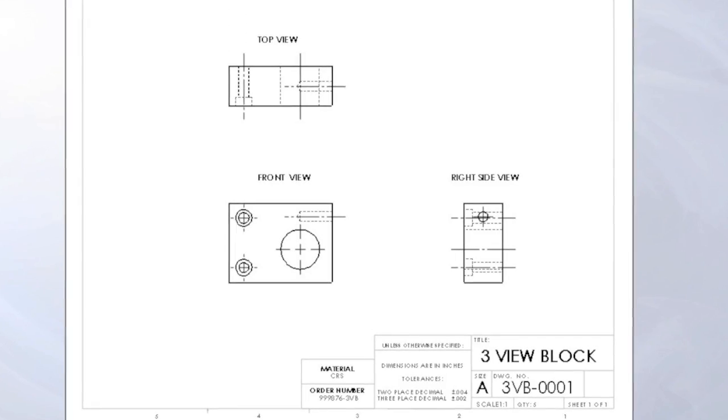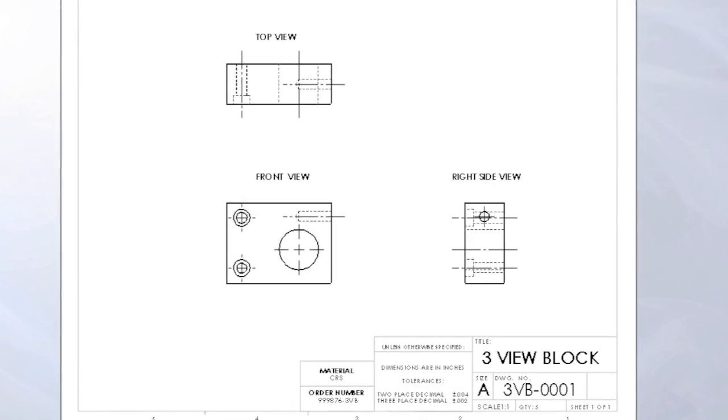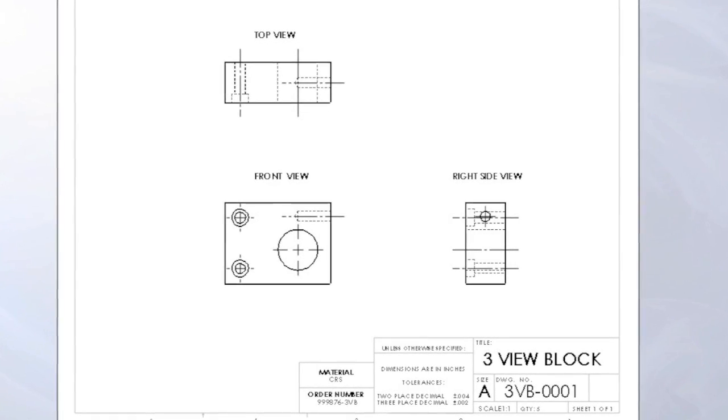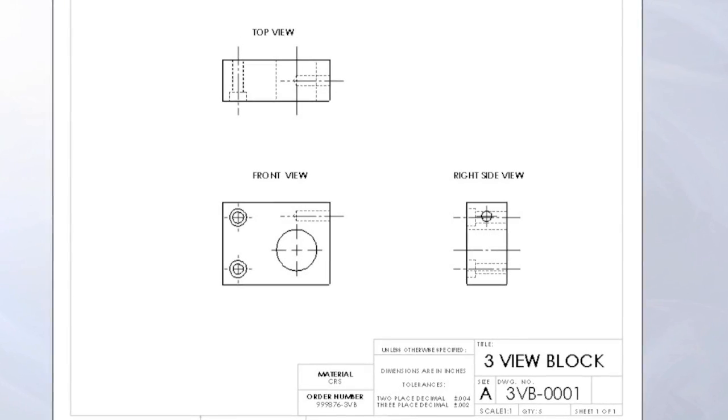When three-view prints are drawn, the drafter must first imagine the object in their mind. They then must first decide what will be the front view of the object.